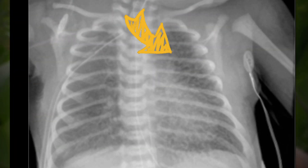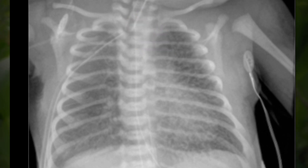You may have a baby that has something like emphysema, meaning they have a lot of air on one side — there's a lot of air trapping on one side. What you want to do in that case is actually do the opposite.